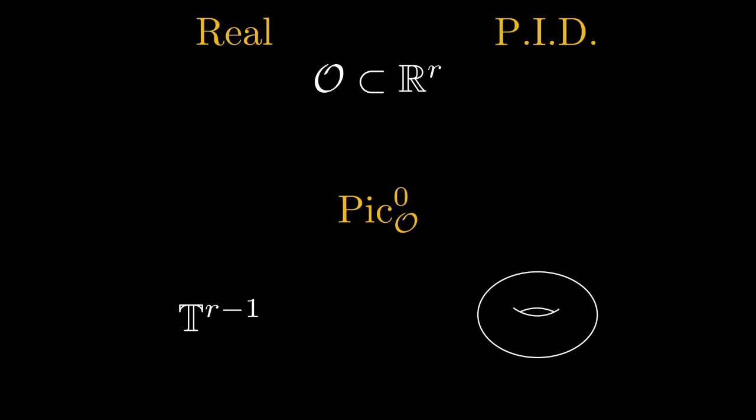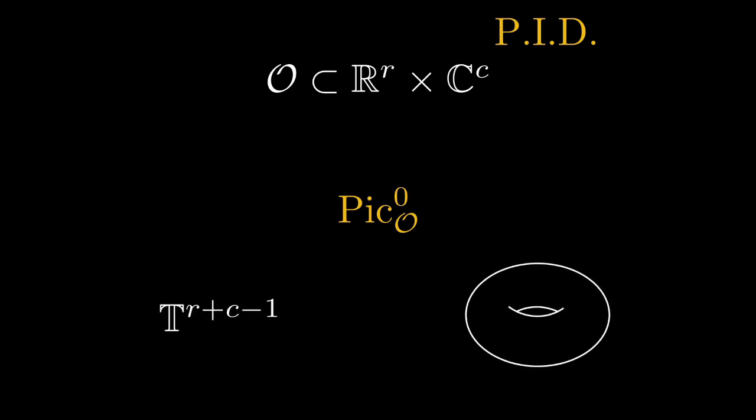If we remove the real assumption, the order needs complex components to be embedded in. The C here denotes the number of conjugate pairs of embeddings. The Arakelov class group is still a torus, but slightly bigger in dimension. By the way, note the loss in dimension again. The ambient space has dimension R plus 2C over the reals as a vector space. But the torus only has dimension R plus C minus 1. This loss is because of modding out the isometries. On each complex dimension there is a unit circle that doesn't really change the lengths of the respective components of the lattice.